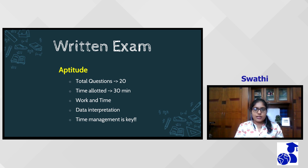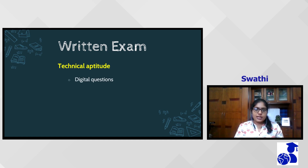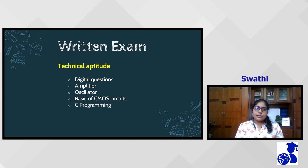The second part, the technical written test, had questions on digital electronics and a few questions on amplifiers, oscillators, and basics of CMOS circuits. The last part, C programming, had questions on writing the output for C programs, with concepts focused majorly on pointers, arrays, and structures.